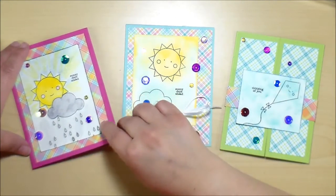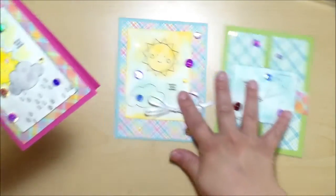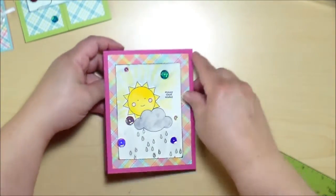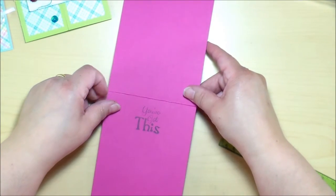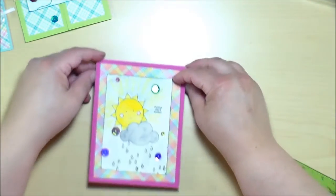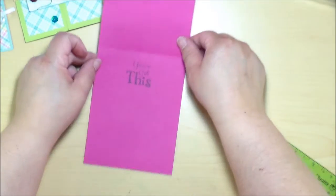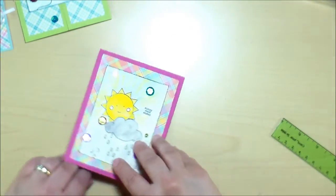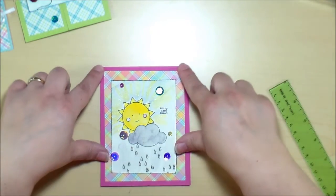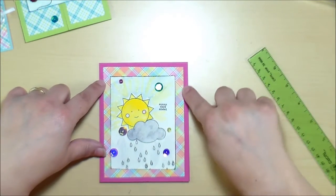But let's go ahead and get started. All of the card bases were made from the cardstock that came with the kit. On this pink card, I cut the eight and a half by twelve inch cardstock in half lengthwise so that it would make a top fold card, a two card.